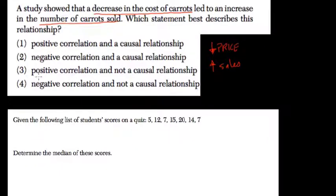And it is causal. The reason we're selling more is because we're offering the carrots for cheaper. So we call it a causal relationship. The drop in price is causing the increase in sales.